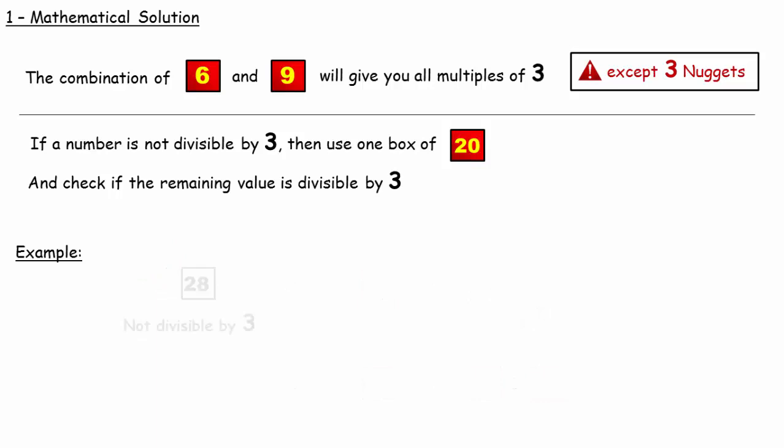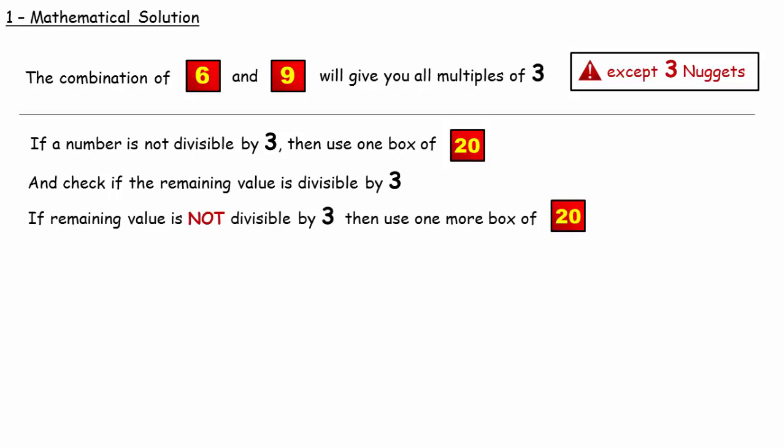But 28 is not possible to buy because after using a box of 20, the remaining 8 cannot be ordered. In the same approach while using one box of 20, if the remaining number is not divisible by 3, then check if you can use another box of 20.